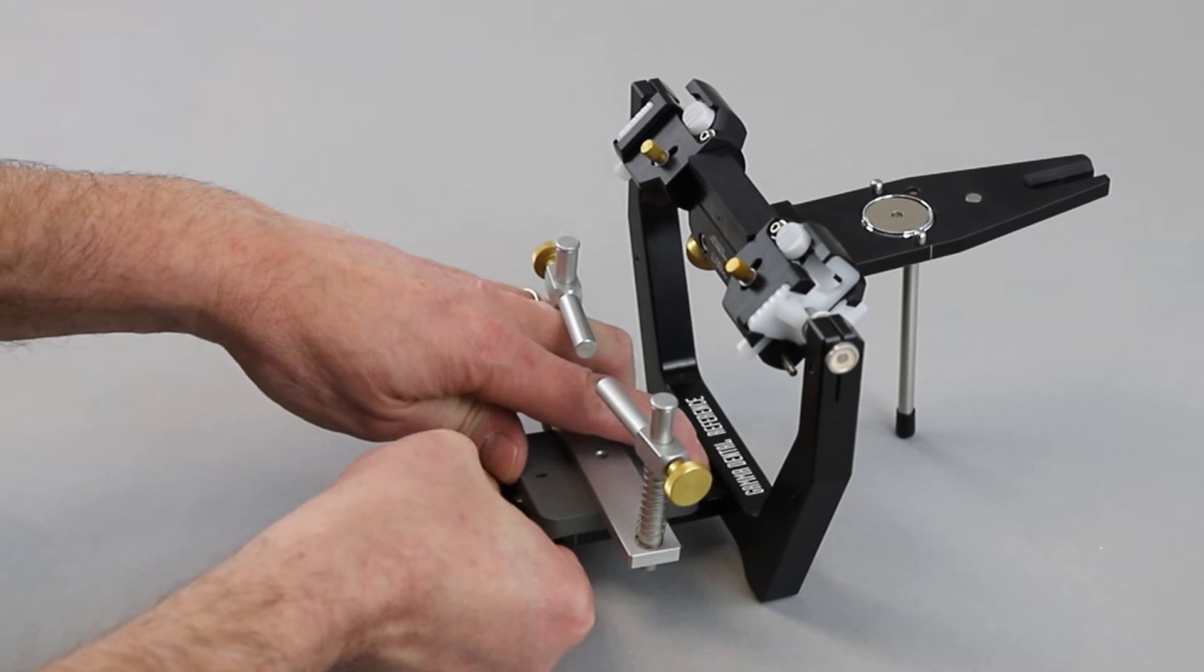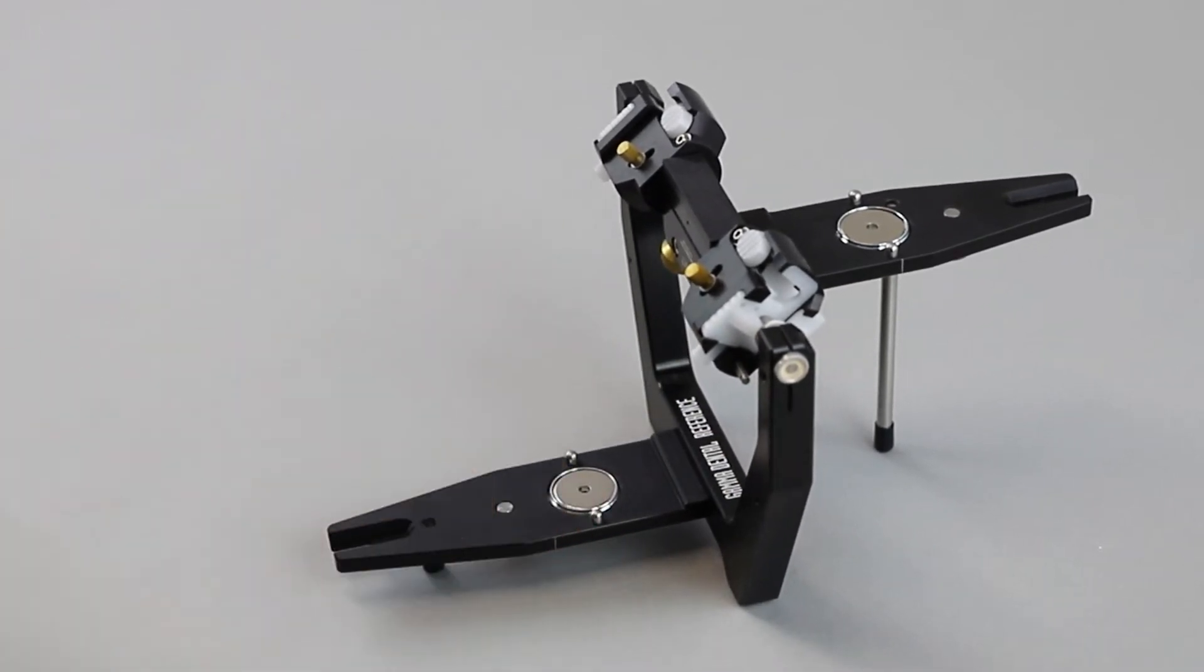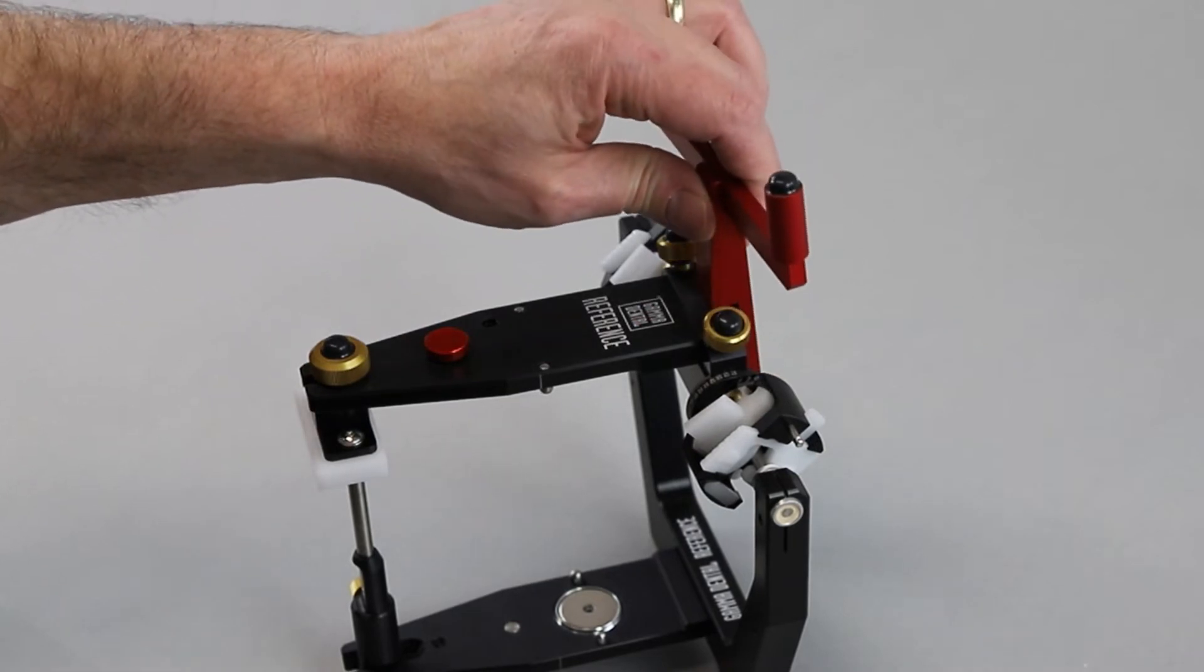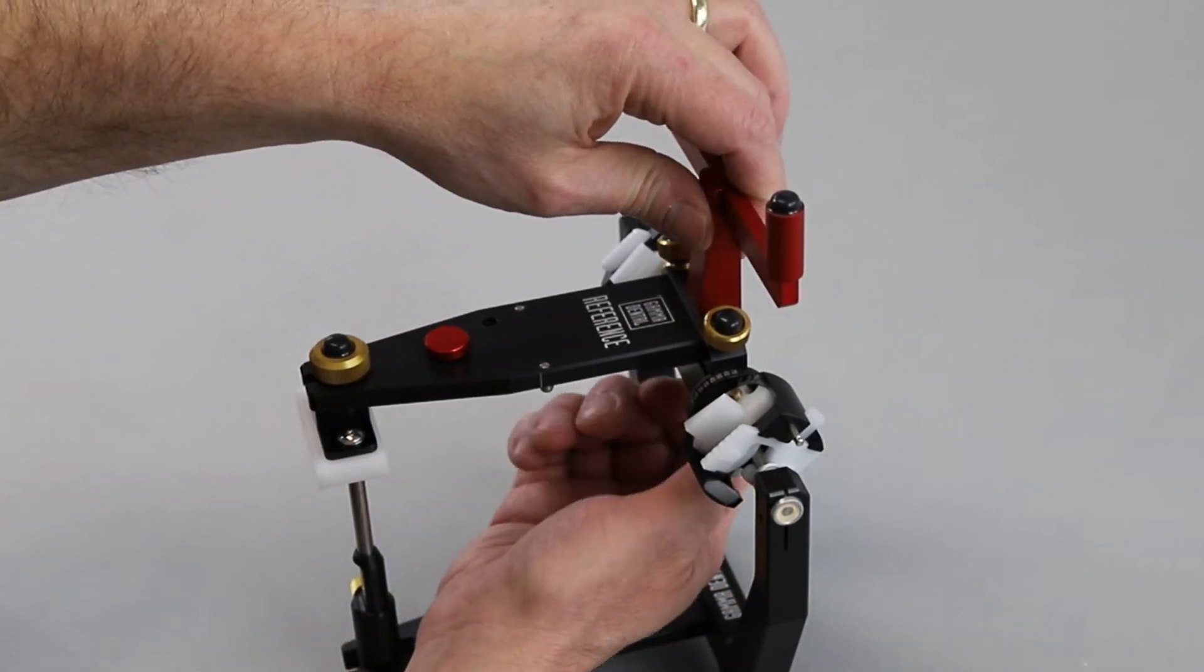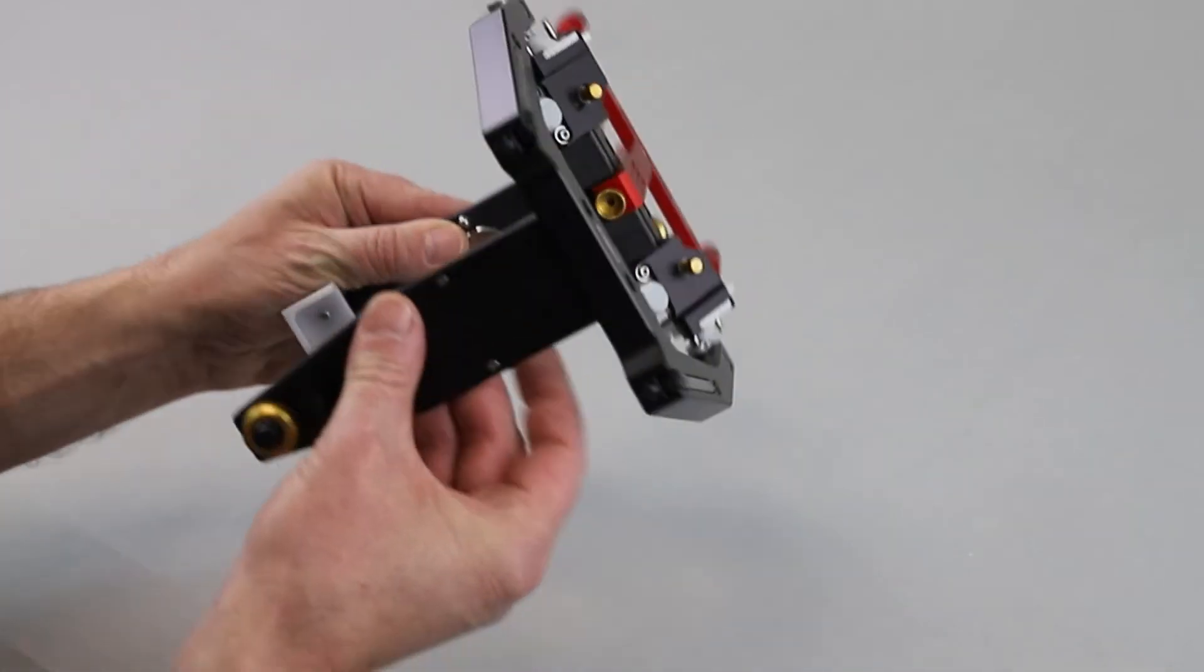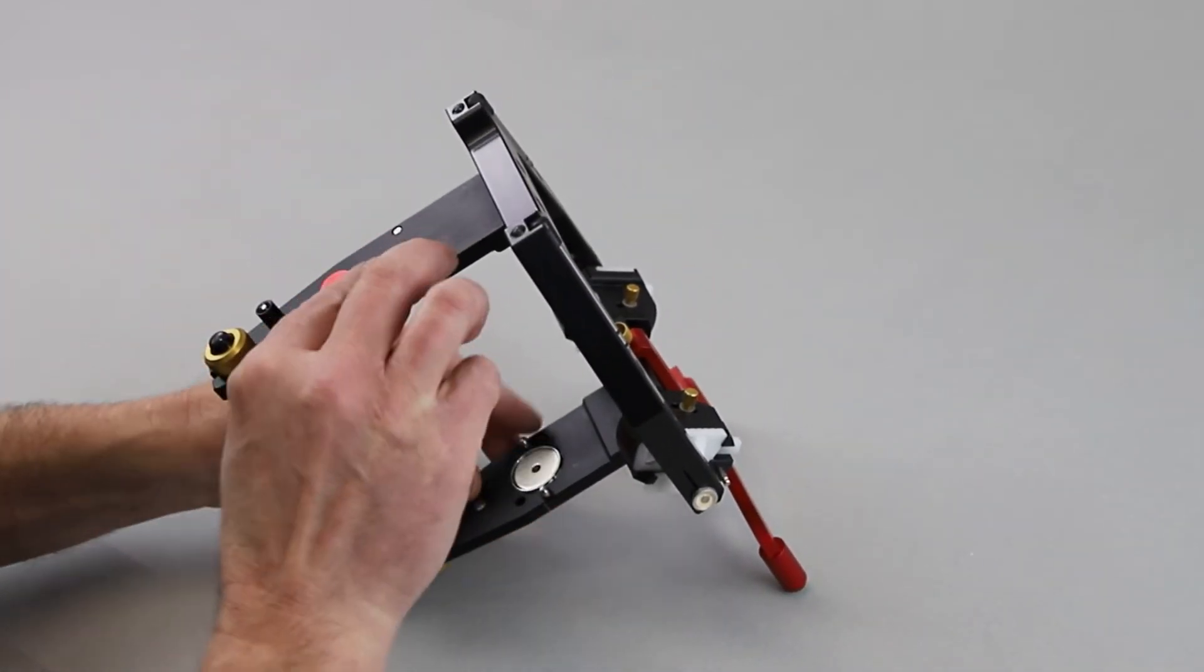To achieve a stable upside down position of the articulator and to avoid errors due to manual handling, attach the mandible mounting clamp to the upper part of the articulator. Lock the articulator in centric and place it upside down on the table.